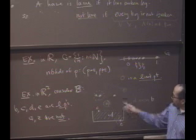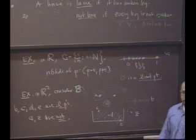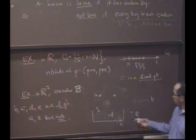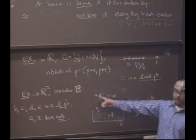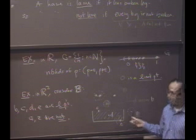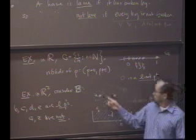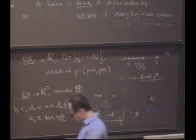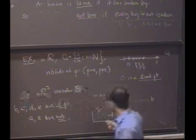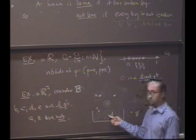Now, I claim A and Z are slightly different in nature, in character. Even though they're not limit points, A is in the set, whereas Z isn't. Okay, so we have a special name for points that are in the set, but not limit points. Because, for instance, D is in the set, but it is a limit point, isn't it?